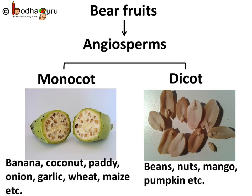Cot is the short form of cotyledon. And if any angiosperm has two cotyledons, it is a dicot — for example, mango, lemon, beans, nuts, pumpkin, etc. are dicots.